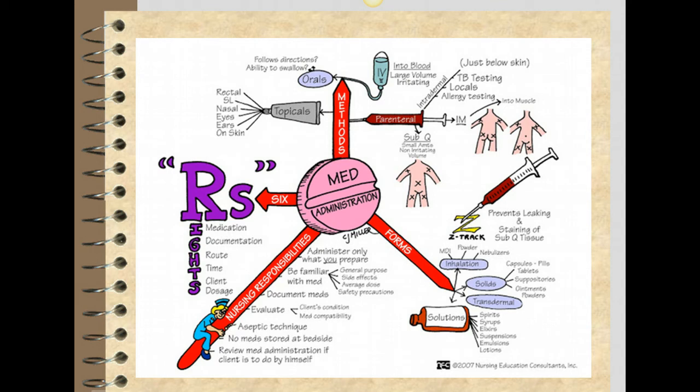It also shows you the forms of medication. For example, it talks about inhalation, solid, and transdermal — and what that is showing you is essentially non-parenteral forms of medication. Injections, IV medications, intramuscular, subcutaneous, and intradermal are all examples of parenteral forms of medication, and you can see that in this illustration.